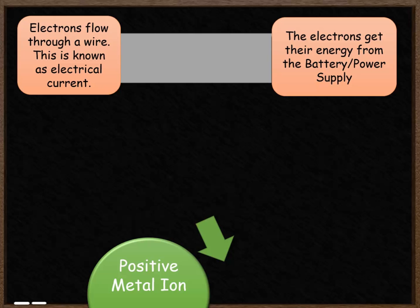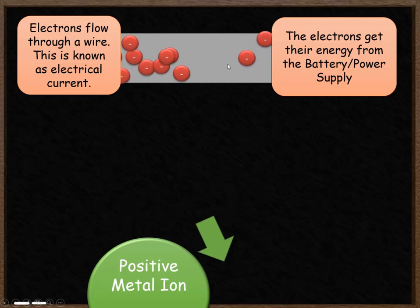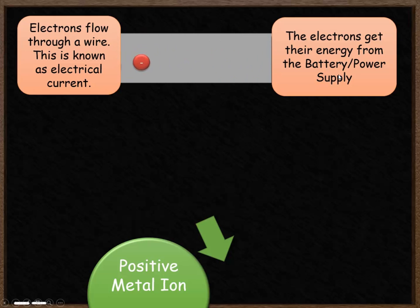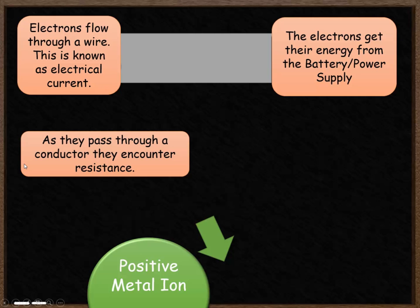Electrons flow through a wire — that's known as an electrical current. The electrons flowing through the wire get their energy from a battery or a power supply. As they flow through the wire they encounter something called resistance, which is a property that slows down that flow of charge and reduces the amount of energy they have.